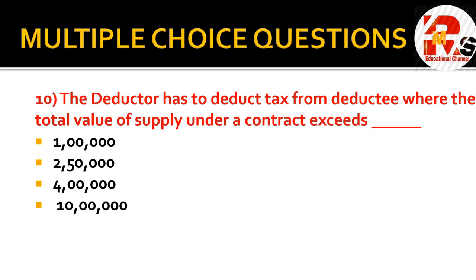The deductor has to deduct tax from the deductee where the total value of supply under a contract exceeds — options are 1 lakh, 2 lakh, 50,000, 4 lakhs, and 10 lakhs. In the case of a contract, you need to remember: the right answer is 2 lakh 50,000. So the deductor deducts tax when supply under a contract exceeds ₹2,50,000.